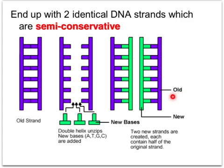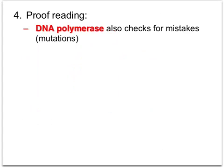Step four is proofreading. As DNA polymerase moves along binding the adjacent nucleotides of the new daughter strand together, it also comes along and checks for any mistakes — any mutations that might have occurred during the process of DNA replication.